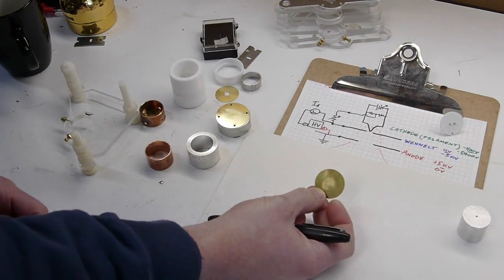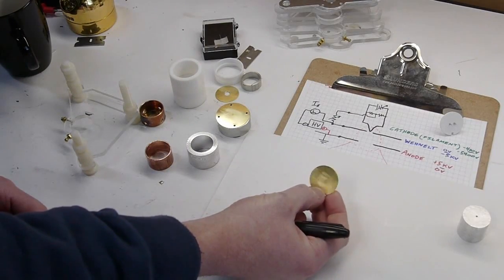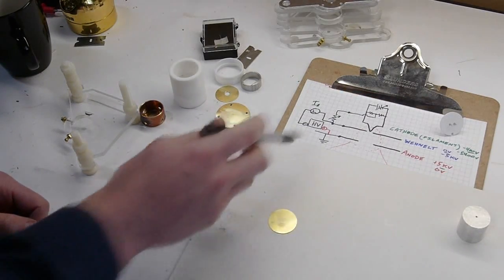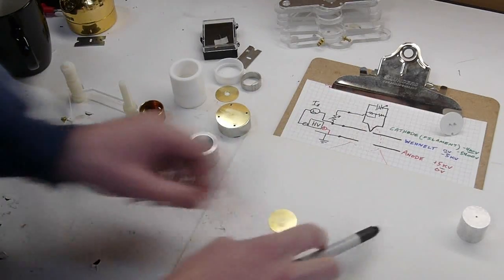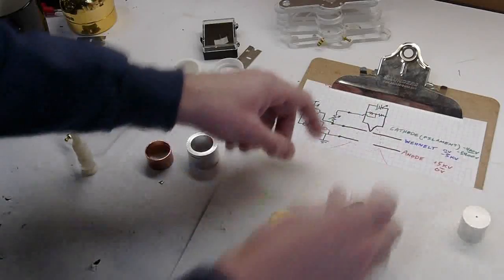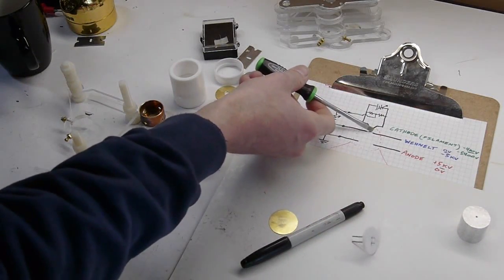And the hole in the Wenelt cylinder is about 500 microns or half a millimeter. I think I might have gone up to 750. The spacing between the filament tip and the Wenelt cylinder bottom, the actual distance between the very tip of the filament and the actual bottom of the Wenelt plate is quite low.